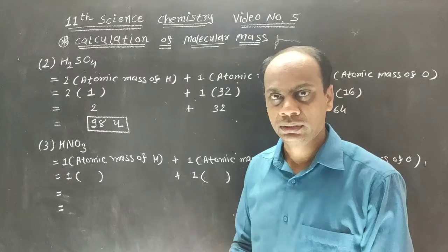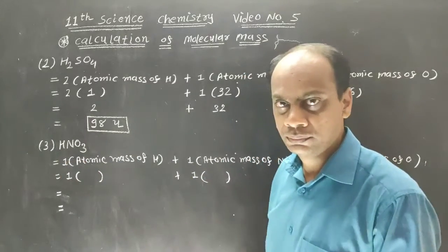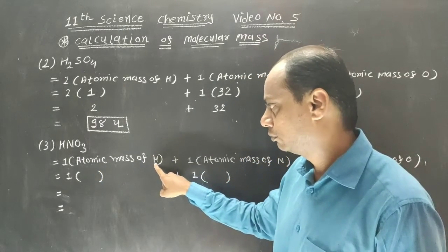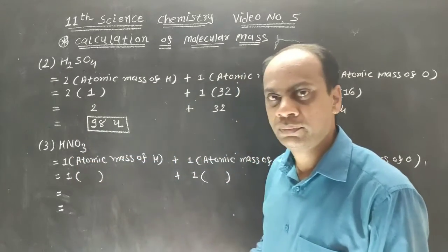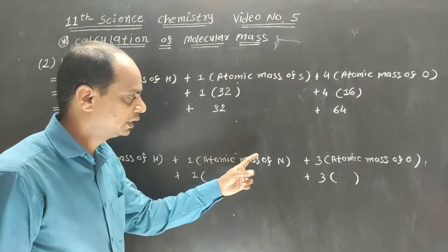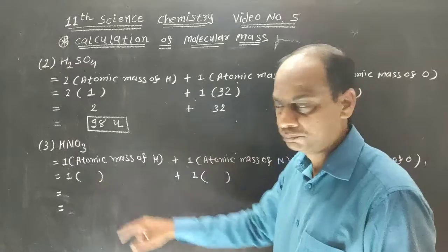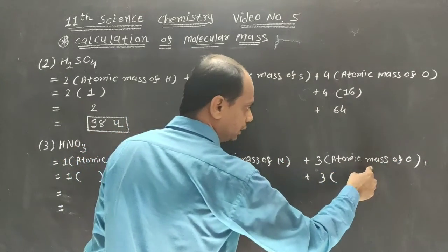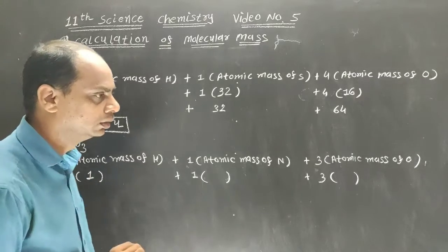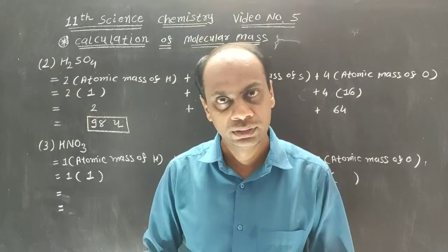Let us calculate example number 3 of HNO3 — nitric acid. The number of hydrogen atoms is only 1, so 1 times atomic mass of hydrogen. Number of nitrogen atoms is only 1, so 1 times atomic mass of nitrogen. Number of oxygen atoms is 3, so 3 times atomic mass of oxygen. Hydrogen atomic mass is 1. Nitrogen has atomic number 7. Using the technique: 1, 9, 4, 7 — 9 is cancelled out.